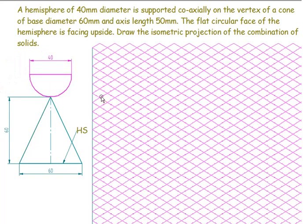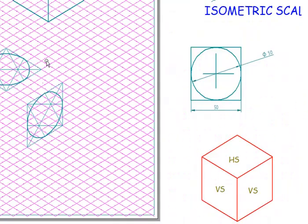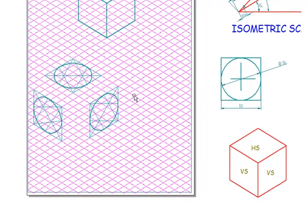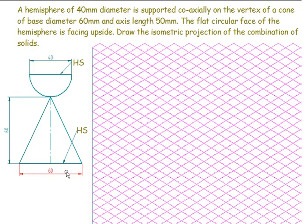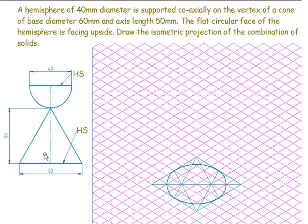The hemisphere diameter is 40. Its cross-section is also circular on the horizontal surface. As seen in previous problems, for the horizontal surface in isometric, we need to draw an ellipse. In this case, we draw it for the 60mm diameter by counting six boxes and drawing the ellipse accordingly.